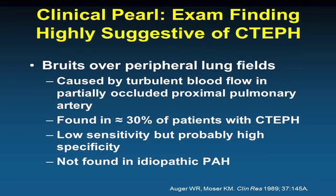The clinical presentation of CTEPH is similar to any other patient with pulmonary hypertension: dyspnea on exertion. Physical examination may offer a clue. As reported by Bill Auger many years ago, in a minority of patients — perhaps 25 to 30% — if you listen carefully to the four quadrants of the chest, you will hear bruits, felt to be due to turbulent blood flow. When found, this is highly suggestive of CTEPH, though its absence does not rule out the disease.